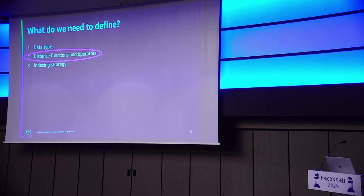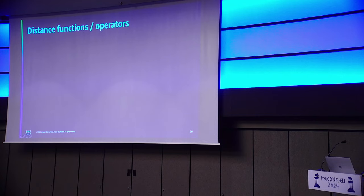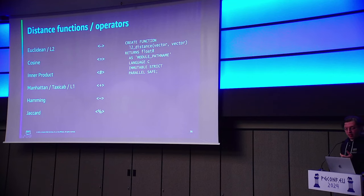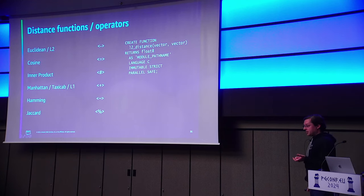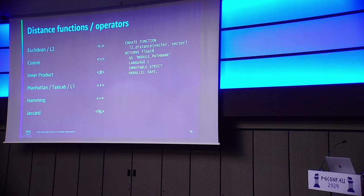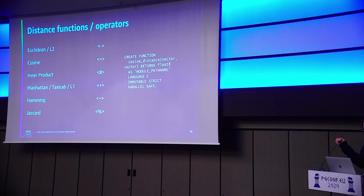So we have a vector data type. Now we need some distance functions. There are all these different distance types we want to implement in PGVector — they all have an operator. In Postgres, when you define an operator, you have to tie it to a function. PGVector does these in C for a lot of different reasons. The key property here is immutable — because if they're immutable, we can use them in indexes. Immutable means that given the same set of inputs, you always get the same outputs. We have to implement this for every single operator. Additionally, if we add more vector data types, we need corresponding functions for the same operators.